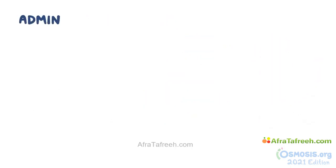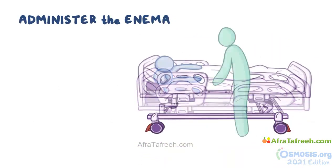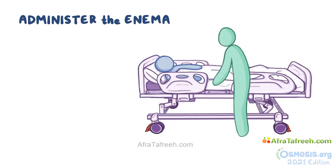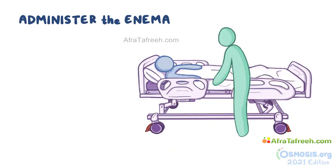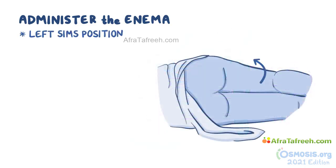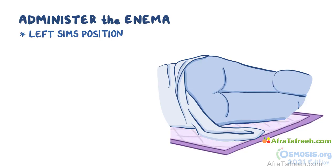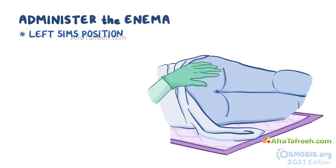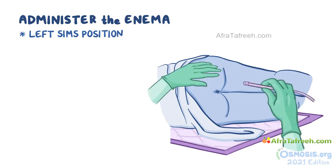Next, we'll need to administer the enema. Raise the bed to a comfortable working height and lower the side rails on the side you'll be working. Help the client into the left Sims position. If one isn't already in place, put a bed protector under their buttocks to prevent the linens from getting dirty. Cover the person so that they are comfortable, leaving the buttocks exposed. With one hand, raise the upper buttock, then grasp the enema tube with the other hand and lubricate it with the water-soluble lubricant.